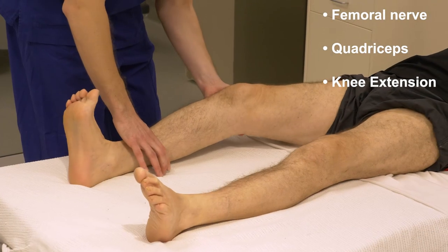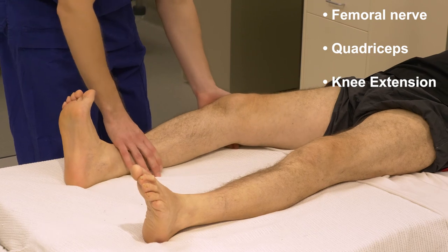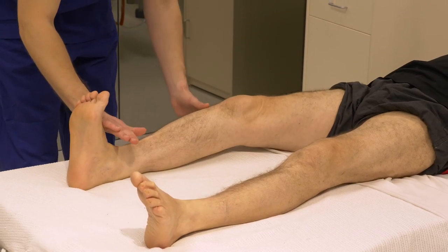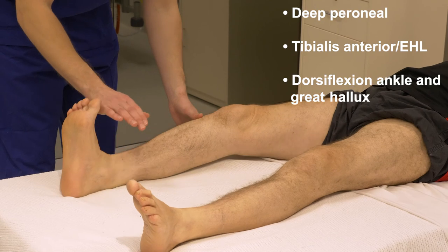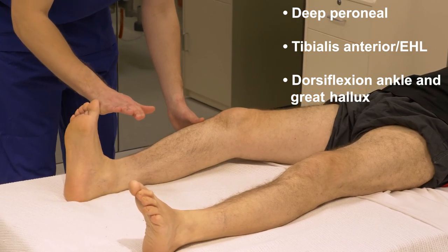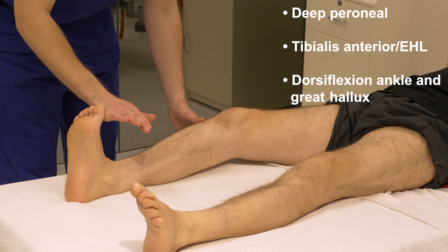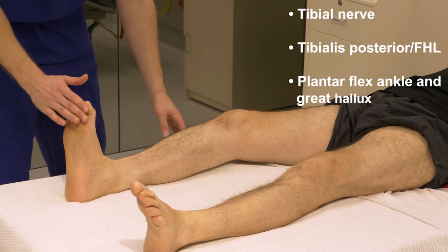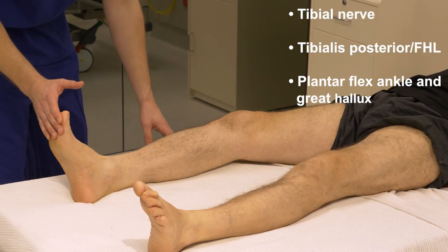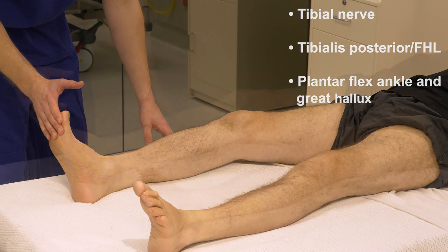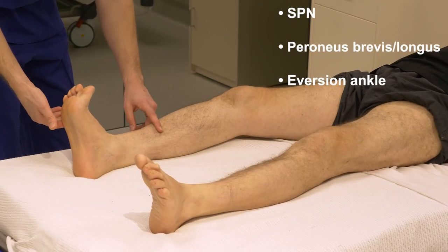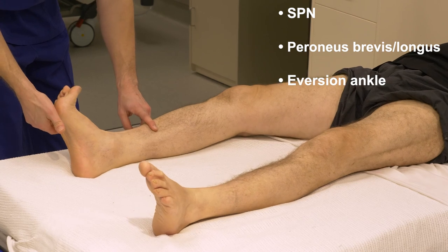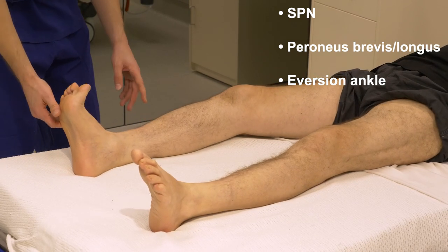Now to the motor assessment. The femoral nerve is responsible for knee extension via the quadriceps muscles. The deep peroneal nerve is responsible for dorsiflexion of the ankle and great toe via tibialis anterior, tibialis posterior, and extensor hallucis longus respectively. The tibial nerve is responsible for plantar flexion of the ankle and great toe via tibialis posterior and flexor hallucis longus respectively. The superficial peroneal nerve is responsible for eversion of the ankle via peroneus brevis and longus.